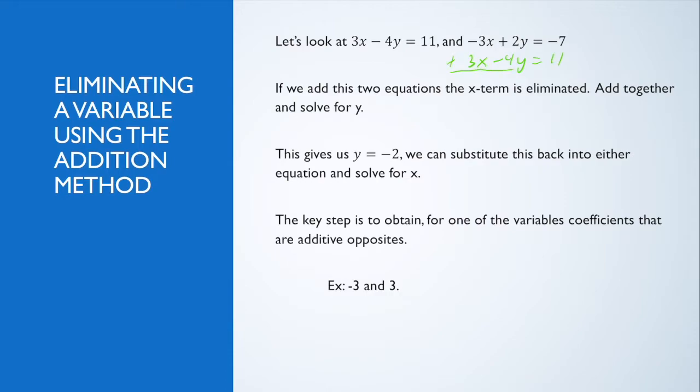If I have negative 3x plus 2y is negative 7 plus 3x minus 4y is 11, I can add these together, because they're both equal. It's like if I had 7 equals 7 and 5 equals 5, if I add those, 12 equals 12. That's why this works. So my x terms cancel. I get negative 2y equals 4, so y equals negative 2. I've solved successfully for one of our variables. I can substitute that back into either of our equations and solve for x.